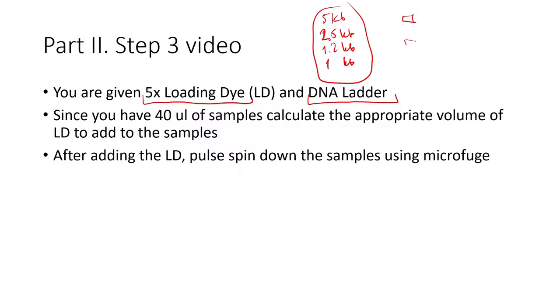This on your gel you will see as the ladder. Because of the presence of this DNA ladder on your gel you can easily compare your own bands. So let's say you have two bands here and it will tell you that the band number two is bigger than 1.2 kilobases but smaller than 2.5 kilobases, as well as the band one is bigger than 2.5 but smaller than 5 kilobases.